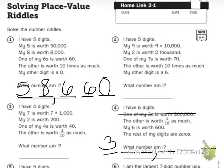And then it says the rest of my digits are zeros. If one of my digits is worth one-tenth as much as 300,000, I'm just going to take a zero away. So what I have left is 30,000.